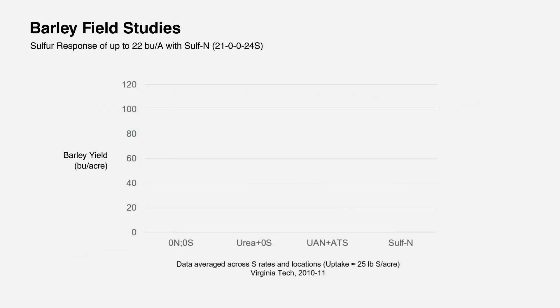A few years ago, we completed some work in barley, and we easily saw a 20 bushel per acre yield increase in fields with sulfur versus no sulfur.